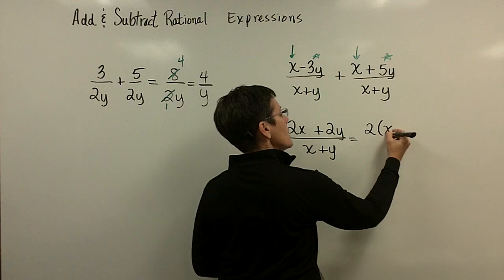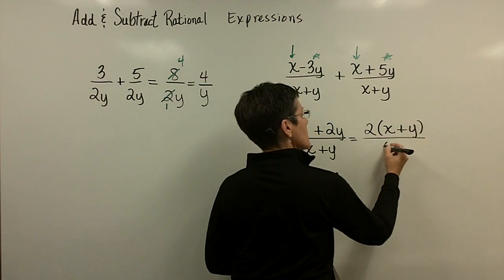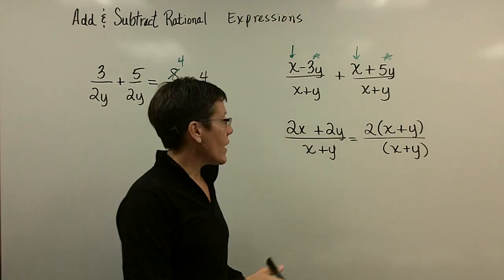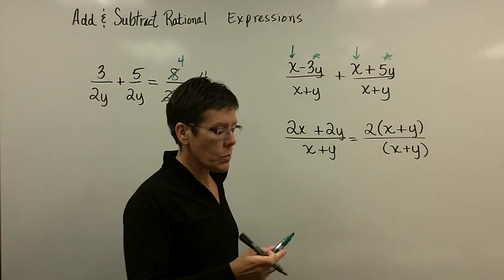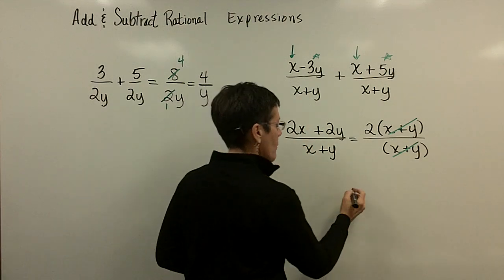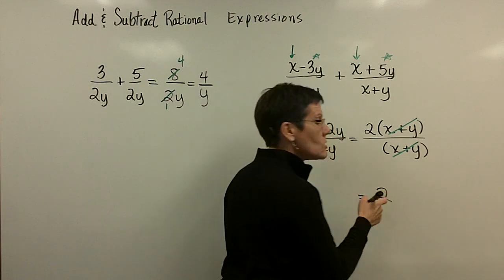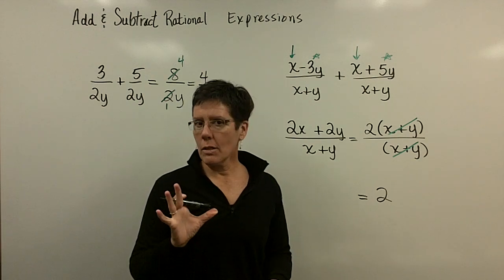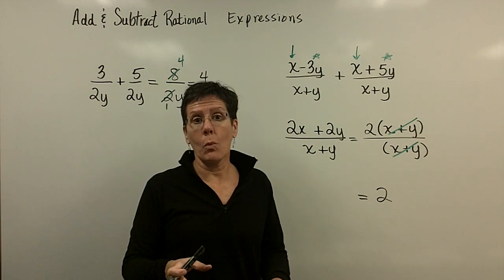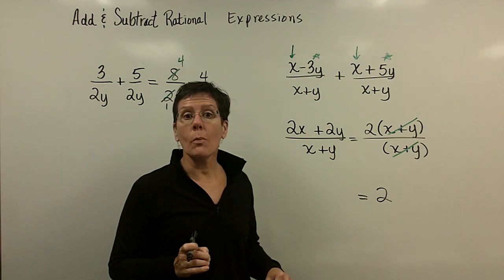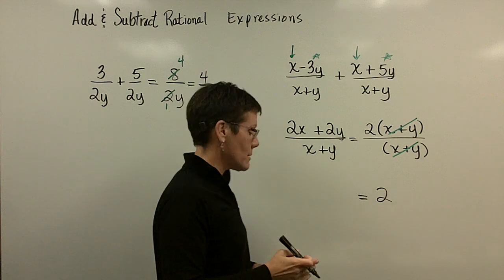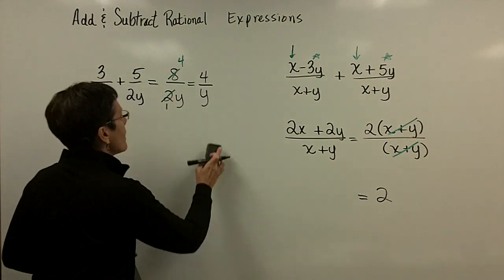When I factor out the 2, I get 2 times (x + y) in the numerator, and my denominator is 1 times (x + y). In its factored form, those common factors cancel, and the result is always 2. No matter what x and y are — you could put 500 in for x and 1,263,000 in for y — you'll get an answer of 2. This is the simplified version after adding and then simplifying that final expression.